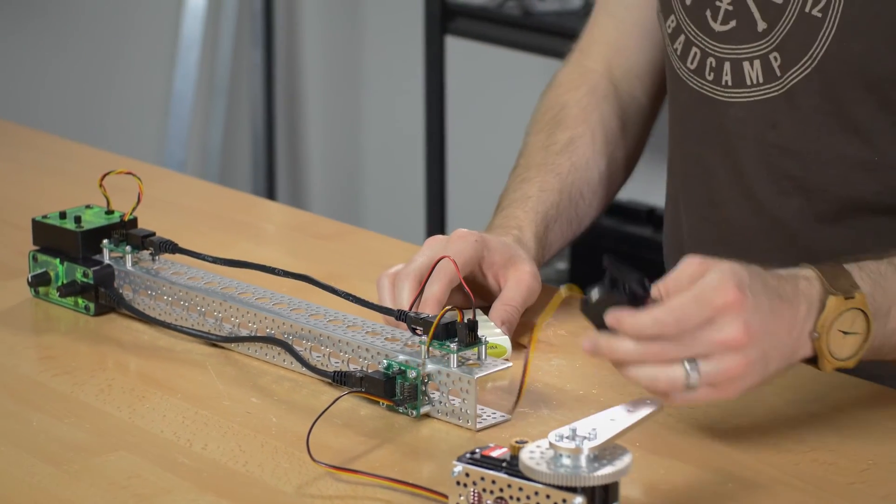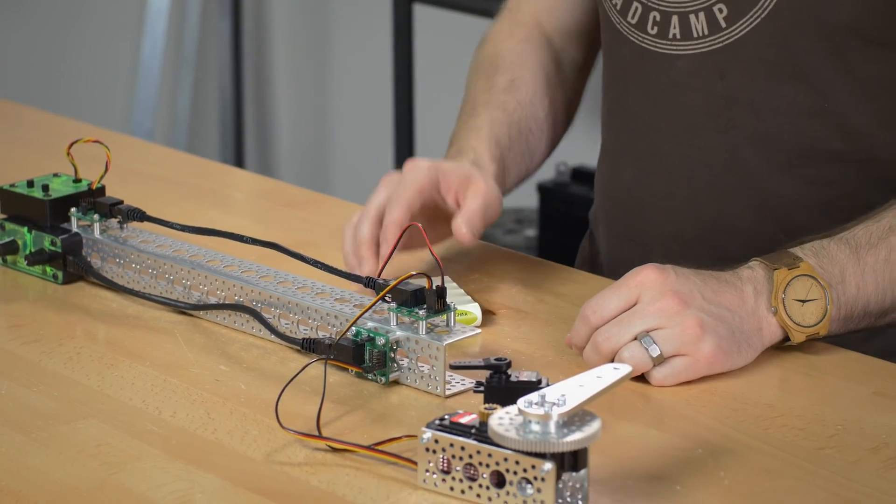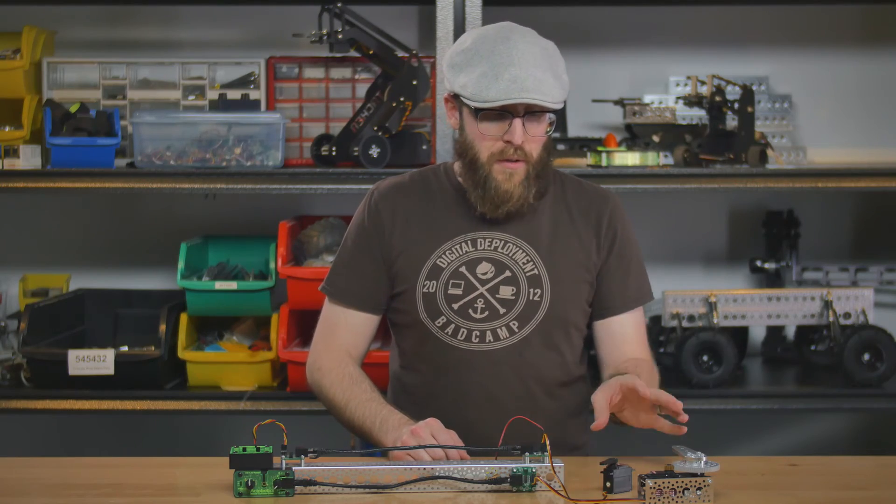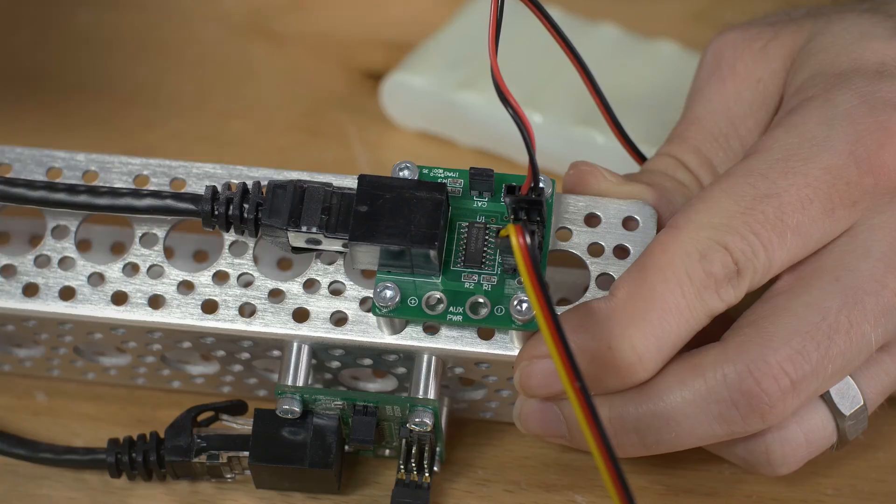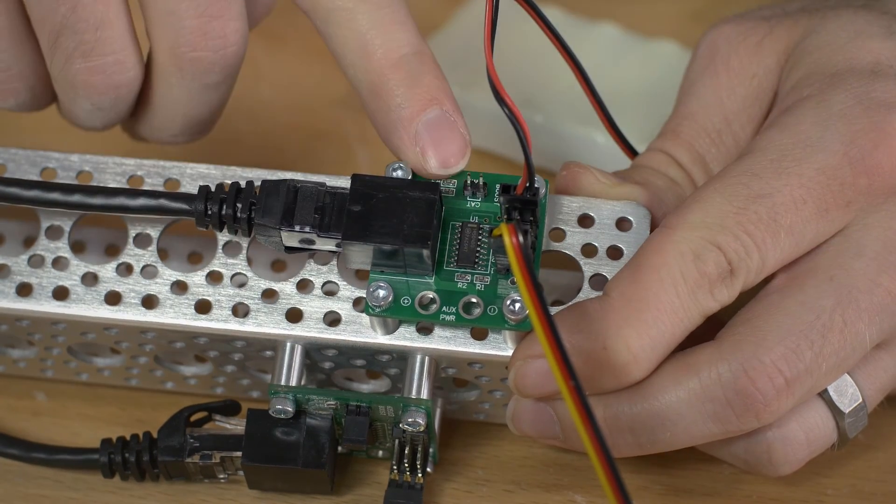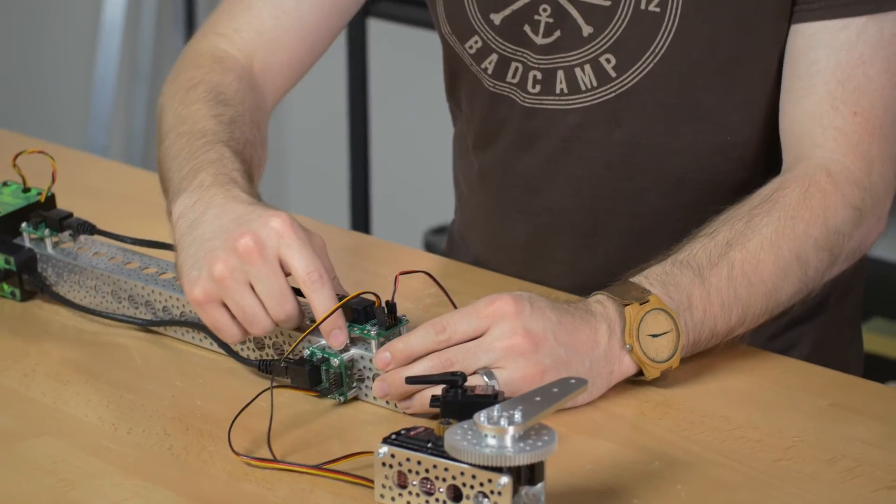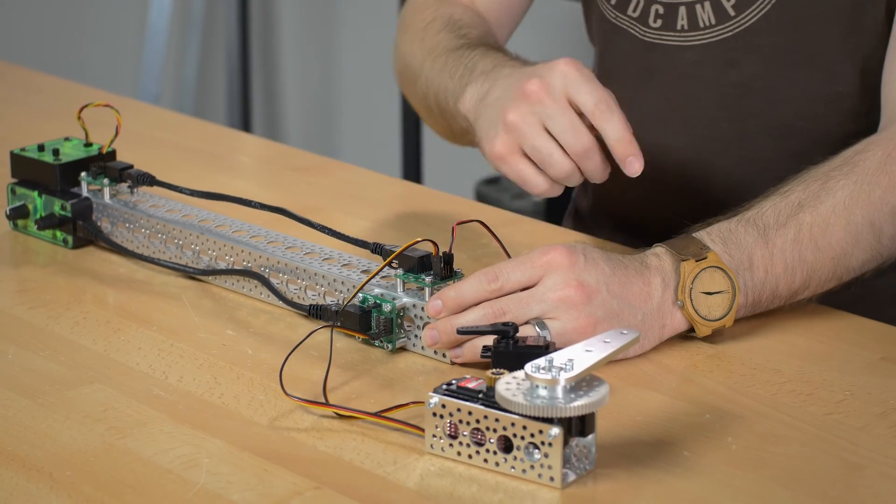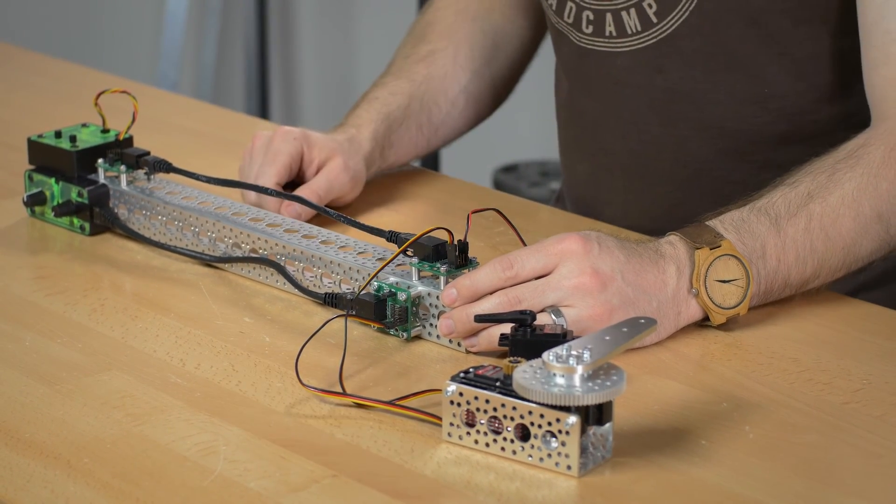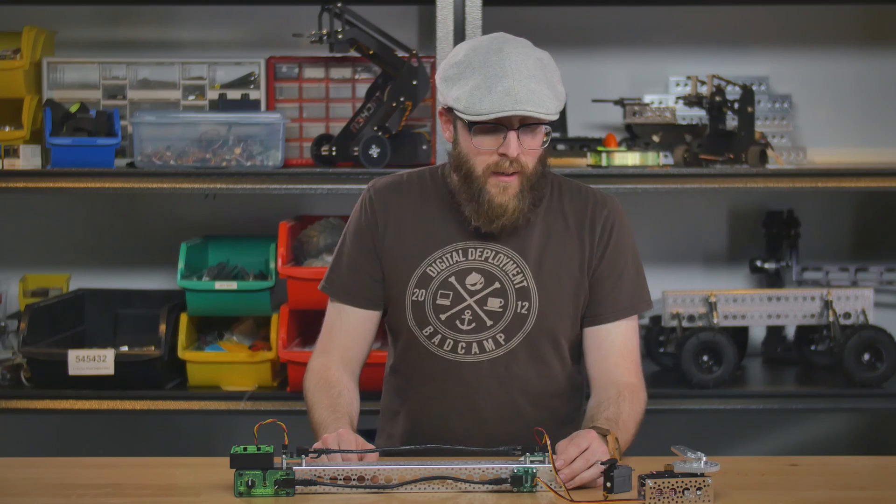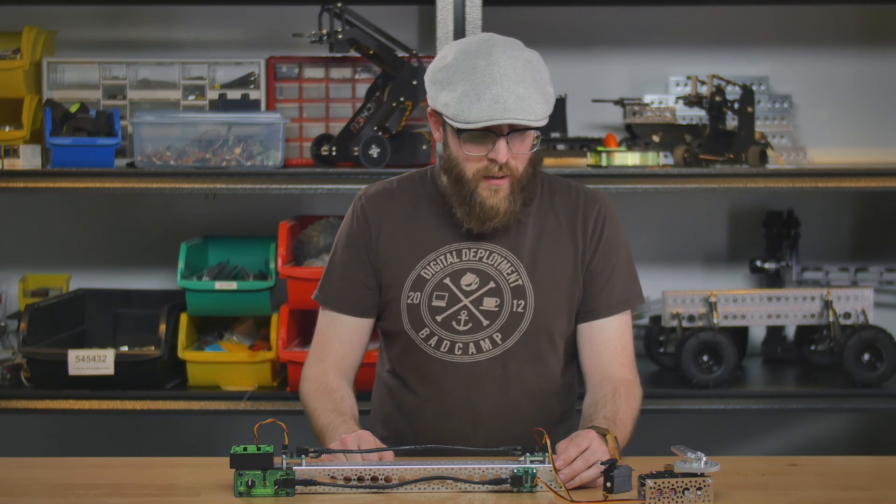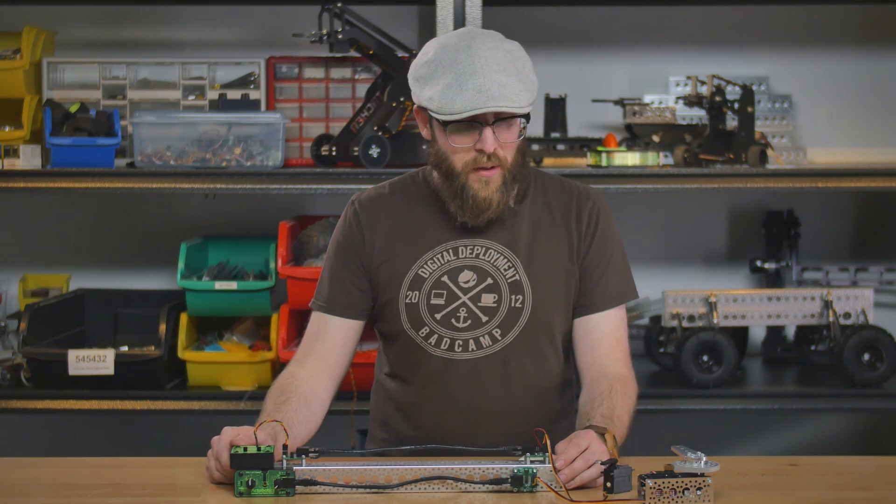Now if you're using a higher voltage servo and you want to have a different power supply for your servo than your electronics you can actually pull this pin here and you can supply a different voltage to the servo through these auxiliary power pads. Here you can solder in a screw terminal or just some wires and supply that higher voltage to your servo.